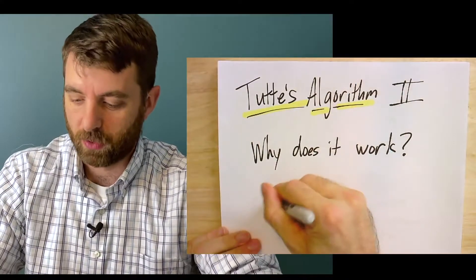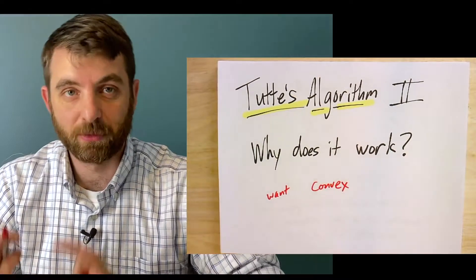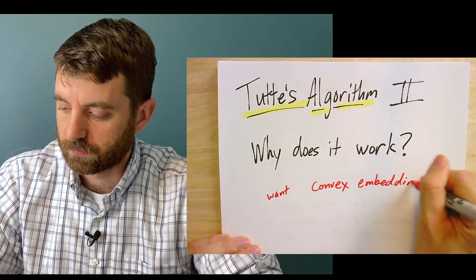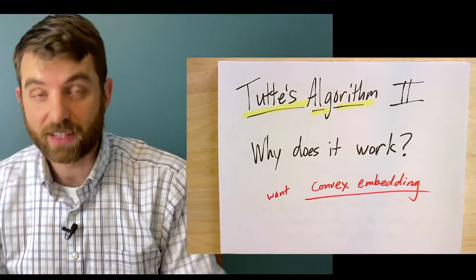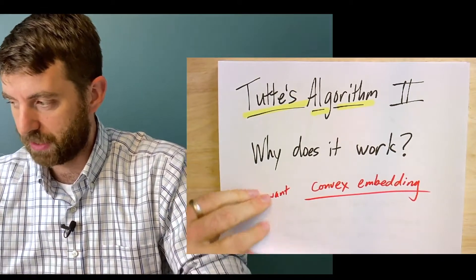Now what? We still need to show it's a good embedding. In fact, we haven't even shown it is an embedding. We want to show something even stronger - not only is it an embedding, but it's a convex embedding. That means every face is going to be a convex polygon. So that's what we're going to do now - show this really does give you a convex embedding.